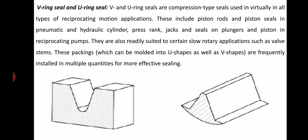V-ring seal and U-ring seal: V and U-ring seals are compression type seals used virtually in all types of reciprocating motion applications. These include piston rods and piston seals in pneumatic and hydraulic cylinders, press rams, jacks, and seals on plungers and piston reciprocating pumps. They are also readily suited to certain low rotary applications such as valve systems. These packings, which can be molded into U-shape as well as V-shape, are frequently installed in multiple quantities for more effective sealing.